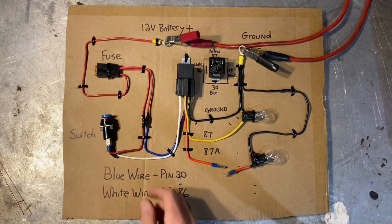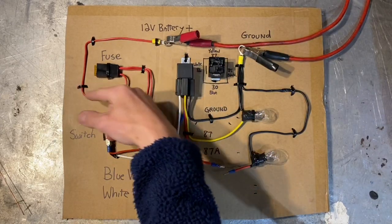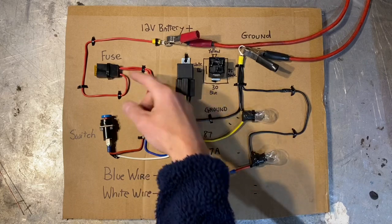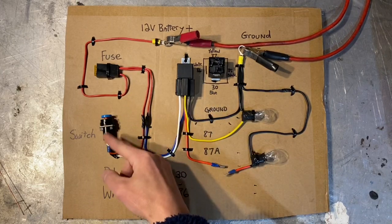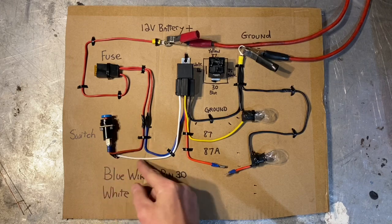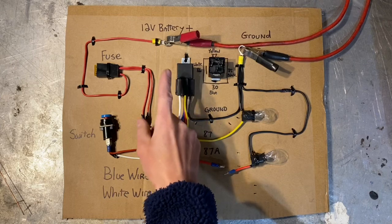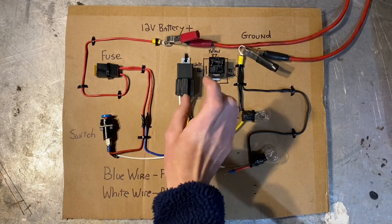Pin 86 is next, and that is what goes to your switch. Now you'll have power coming through a fuse, just like you did with pin 30, but you'll also have a wire going to the switch, because you need to send power to the switch. On the other side of the switch, you'll have a wire going to pin 86 on the relay.